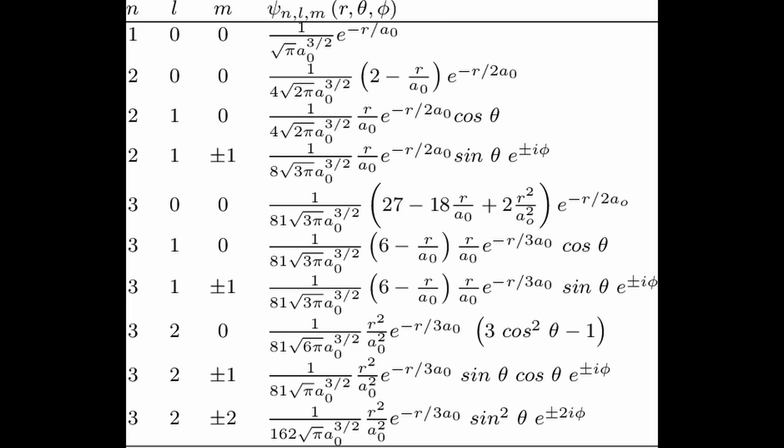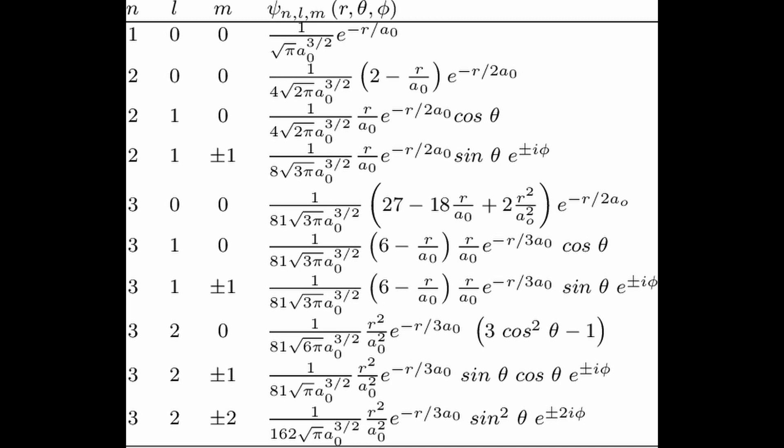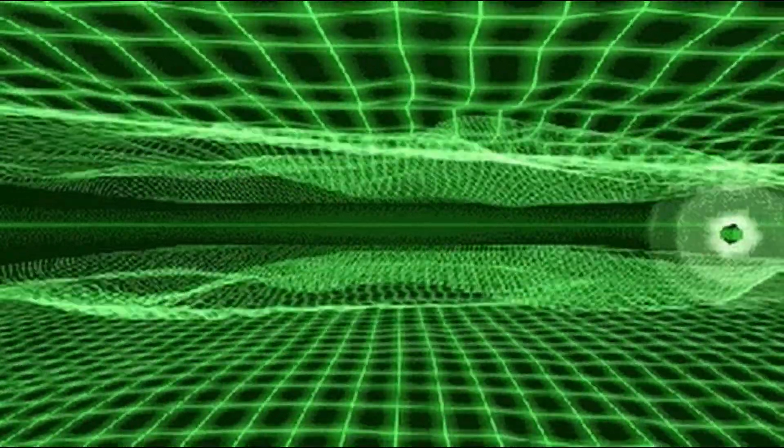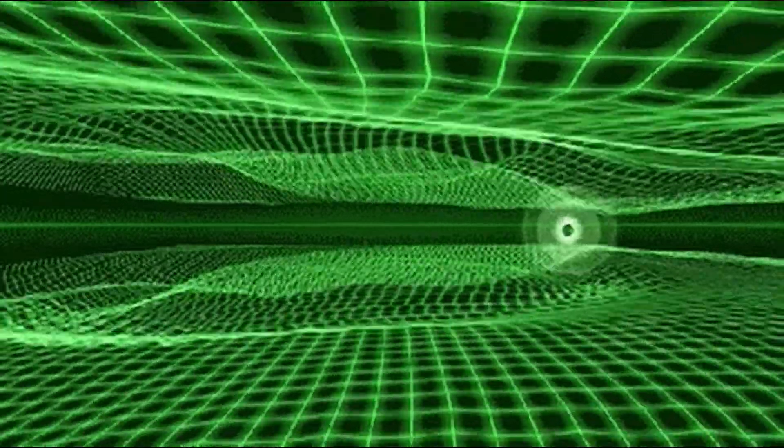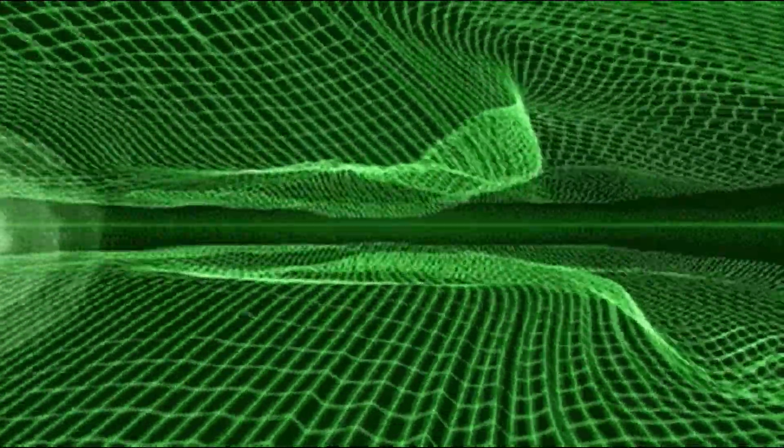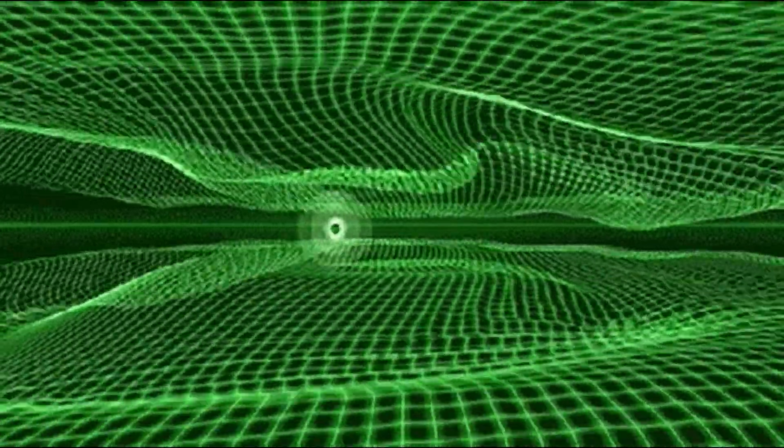These operators describe the creation or destruction of a particle at a particular point in space and time. For a scalar field phi(x), the creation and annihilation operators are denoted by a†(k) and a(k), respectively, and are defined by: phi(x) = integral d³k / (2π)³ * 1/sqrt(2*omega_k) * [a(k)*e^(ikx) + a†(k)*e^(-ikx)], where omega_k is the frequency of the mode corresponding to wave vector k.